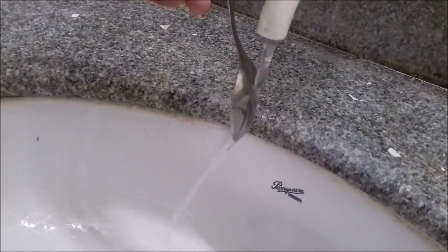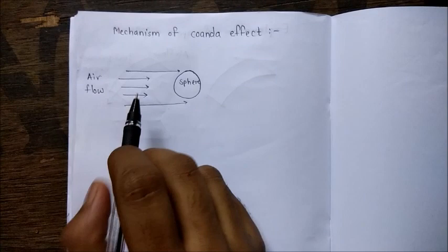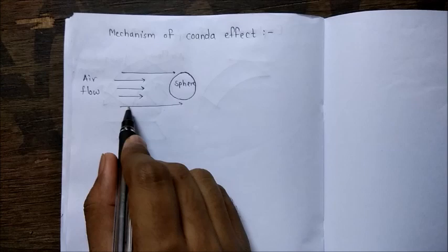Mechanism of Coanda Effect. Consider a spherical body over here and air flowing in this direction. Now when the air flow reaches at this point, it pushes the air molecules over here in this direction. This creates a low pressure region over here.